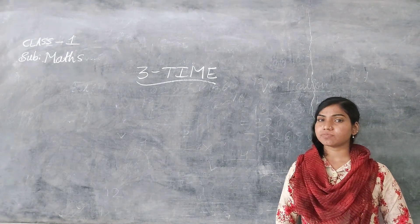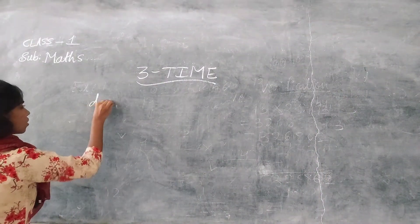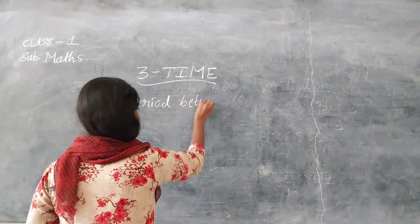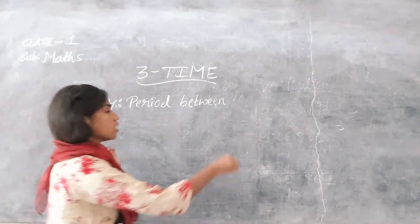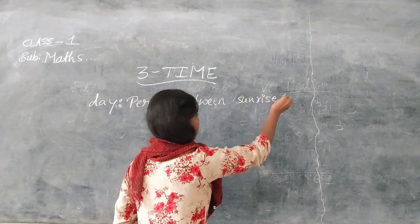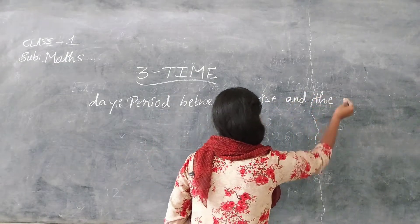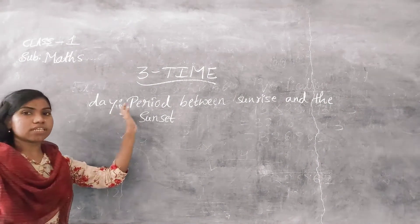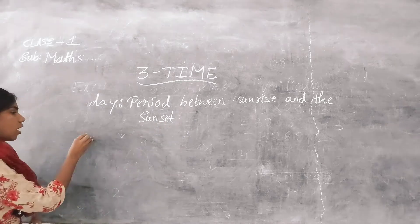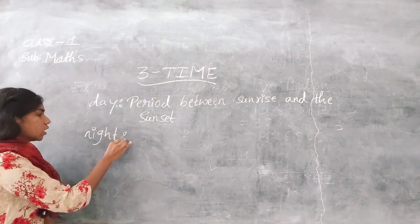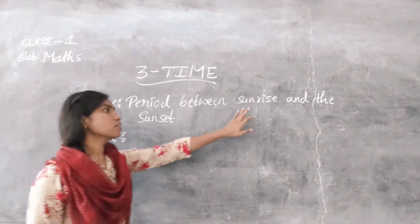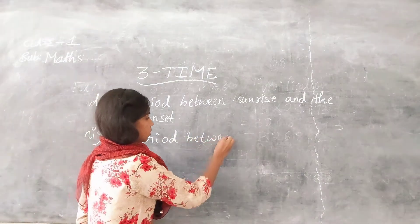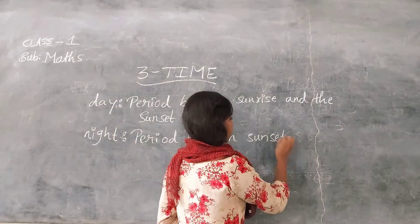So what is the meaning of day and night? Day means it is a period between sunrise and sunset. And the next one is night. Night is a period between sunset and sunrise.